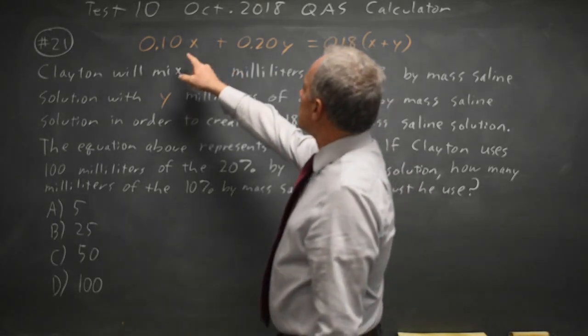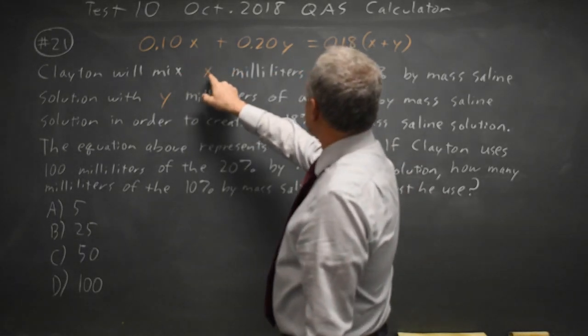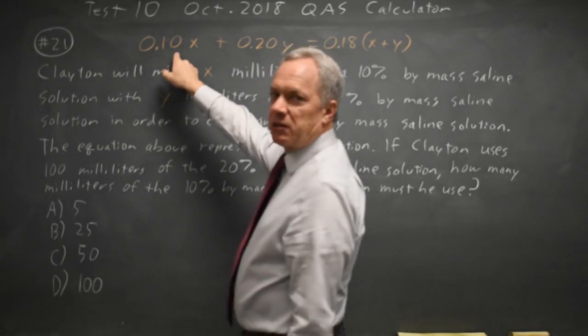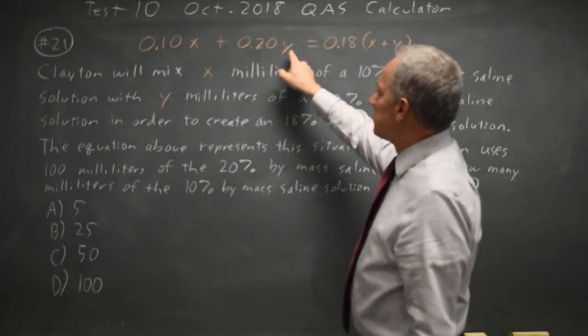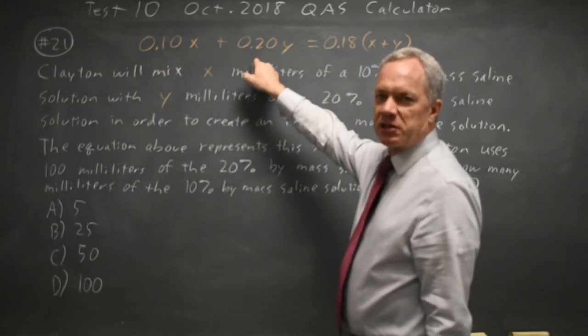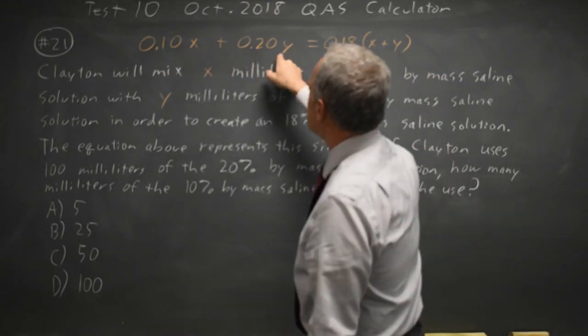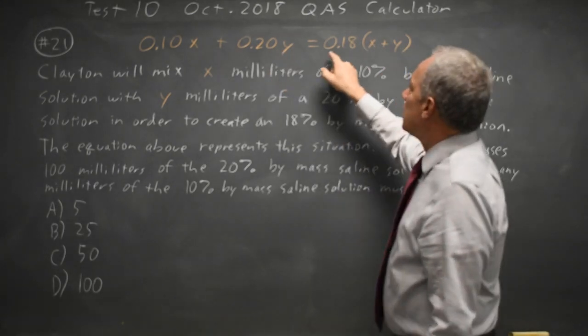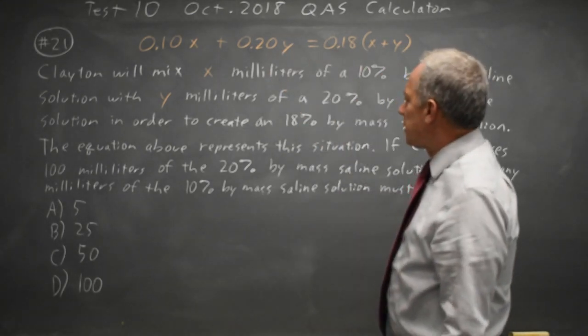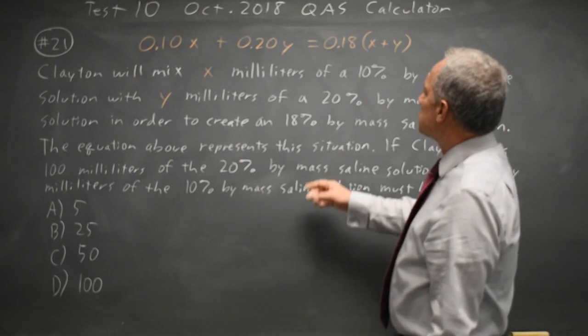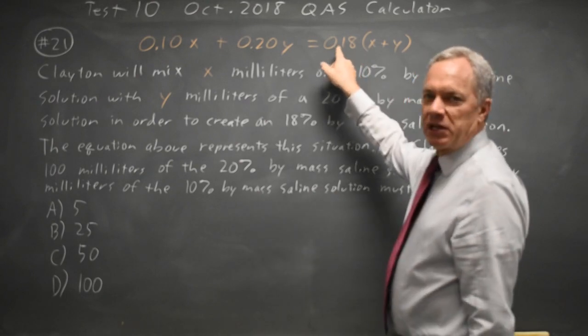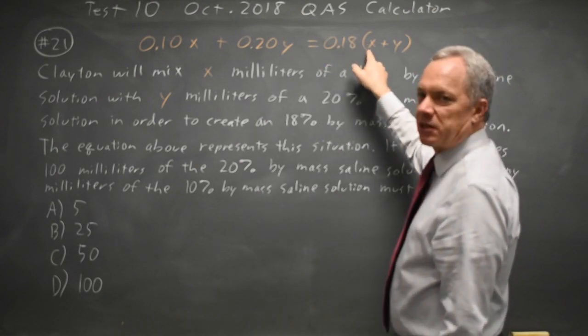Clayton mixes x milliliters of a 10% solution with y milliliters of a 20% solution, so the amount of salt in these will be .1x + .2y, and he creates an 18% solution, so the amount of salt in that is .18, 18% of the total amount x + y.